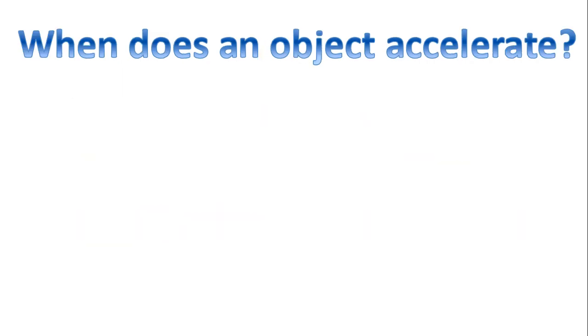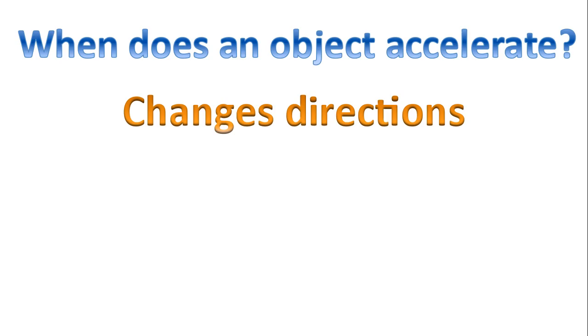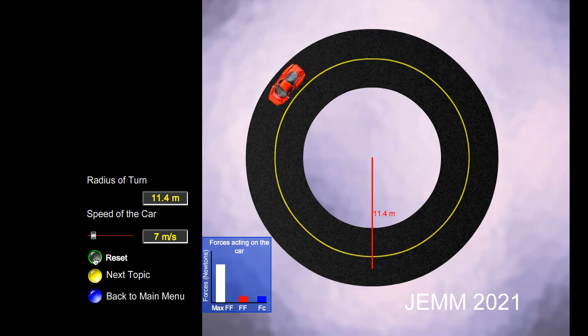When does an object accelerate? An object accelerates when it changes direction. For example, when this car turns, it is accelerating.